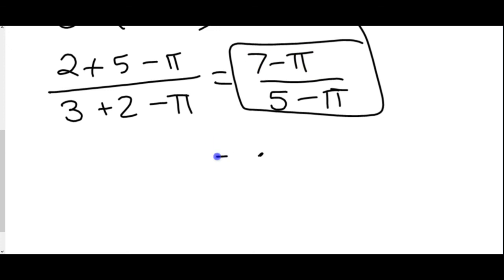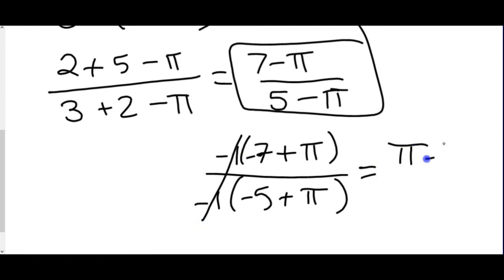So if we factored out a negative 1, this would become negative 7 plus pi. Same thing on the bottom. We'd factor out a negative 1. That would become negative 5 plus pi. Negative over a negative makes positive. So then we could write this as pi minus 7 over pi minus 5.